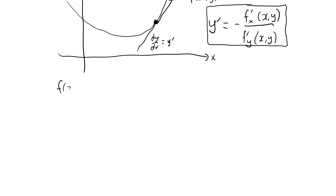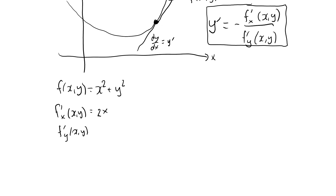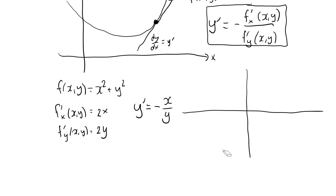As an example, let's look at our function f(x, y) equal to x squared plus y squared again. We easily find the partial derivatives: the partial derivative with respect to x is 2x, and the partial derivative with respect to y is 2y. According to our formula, y prime is equal to minus 2x over 2y. We can cancel the 2, giving minus x over y.